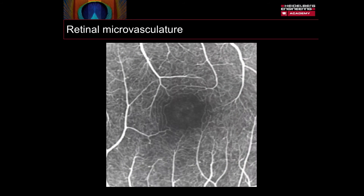However, the foveal avascular zone can be clearly seen and the foveal arcade outlined. The integrity of the foveal arcade has allowed clinicians to gain an indication of visual performance or potential in a patient, and is an important clinical feature to identify during IV fluorescence angiography.